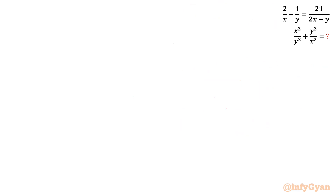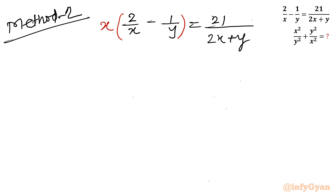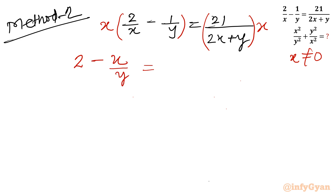Now I will consider Method number 2. As per our equation 2/x minus 1/y equals 21/(2x+y), I will multiply both sides by x. This gives 2 minus x/y equals 21x/(2x+y).